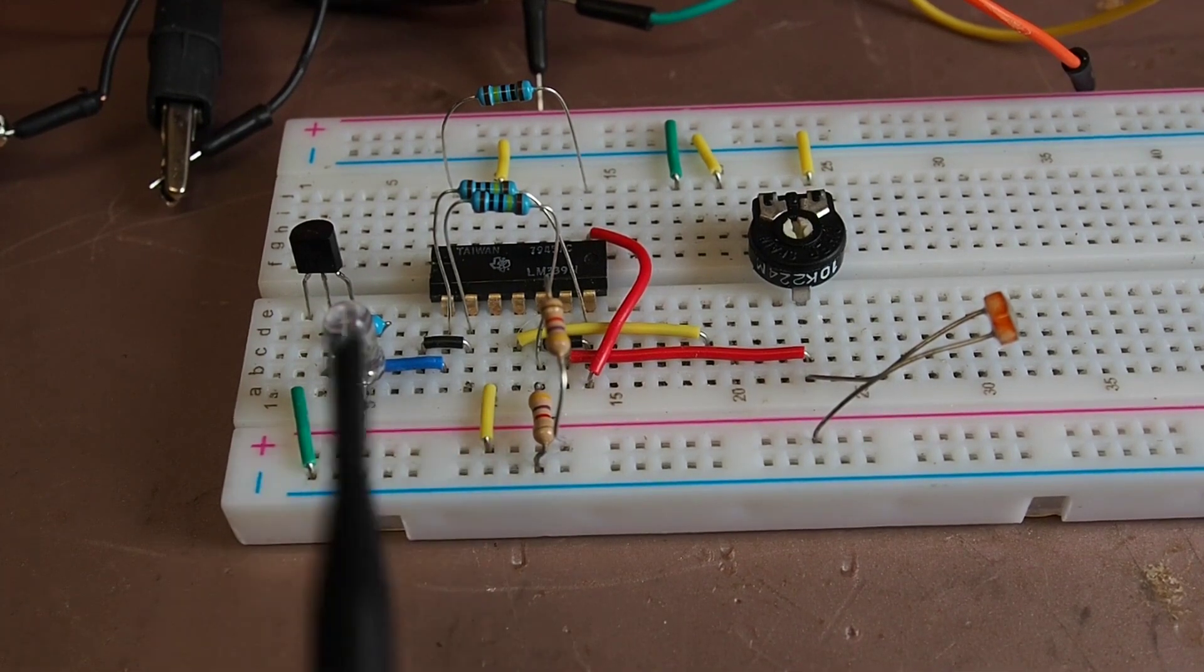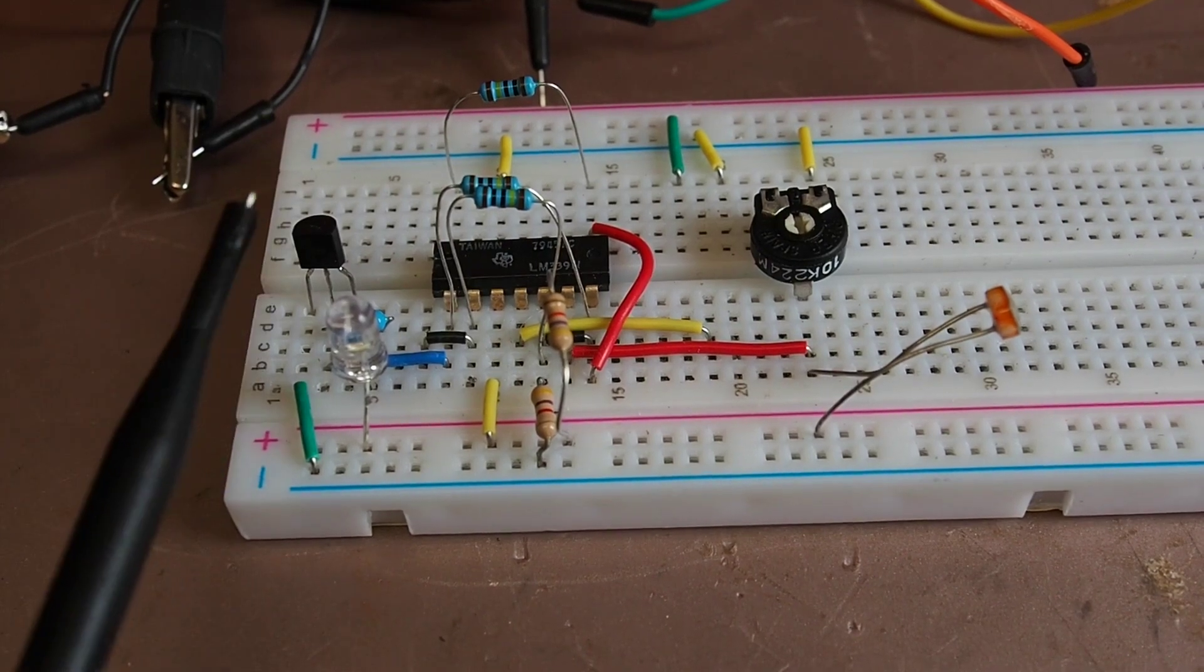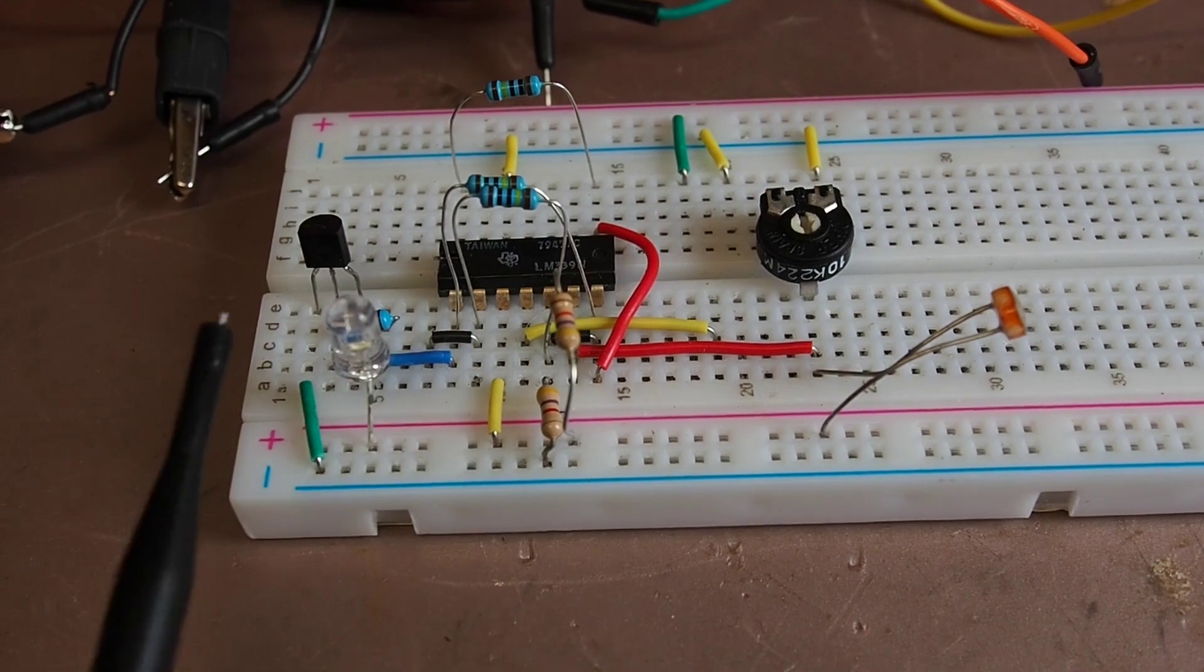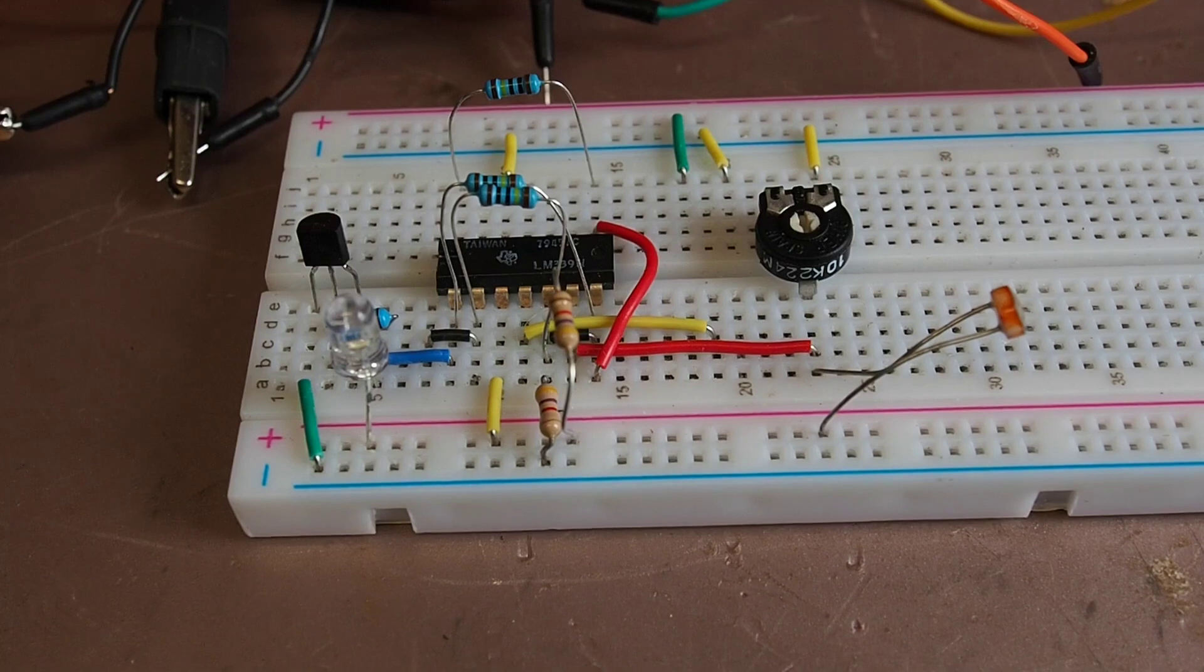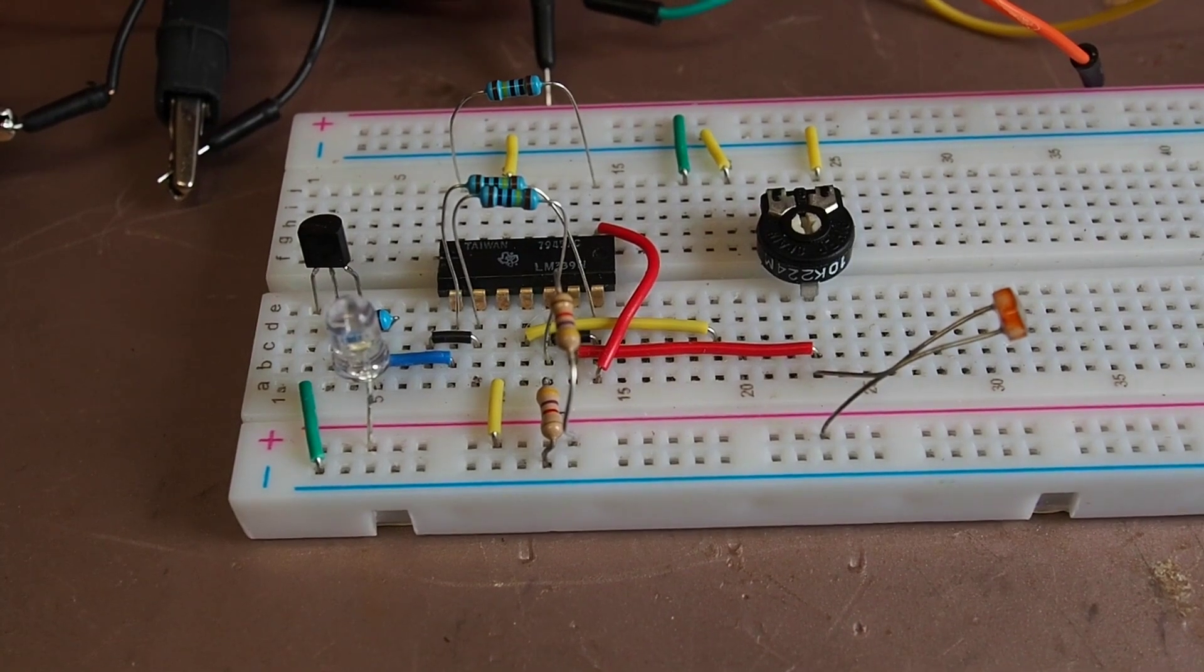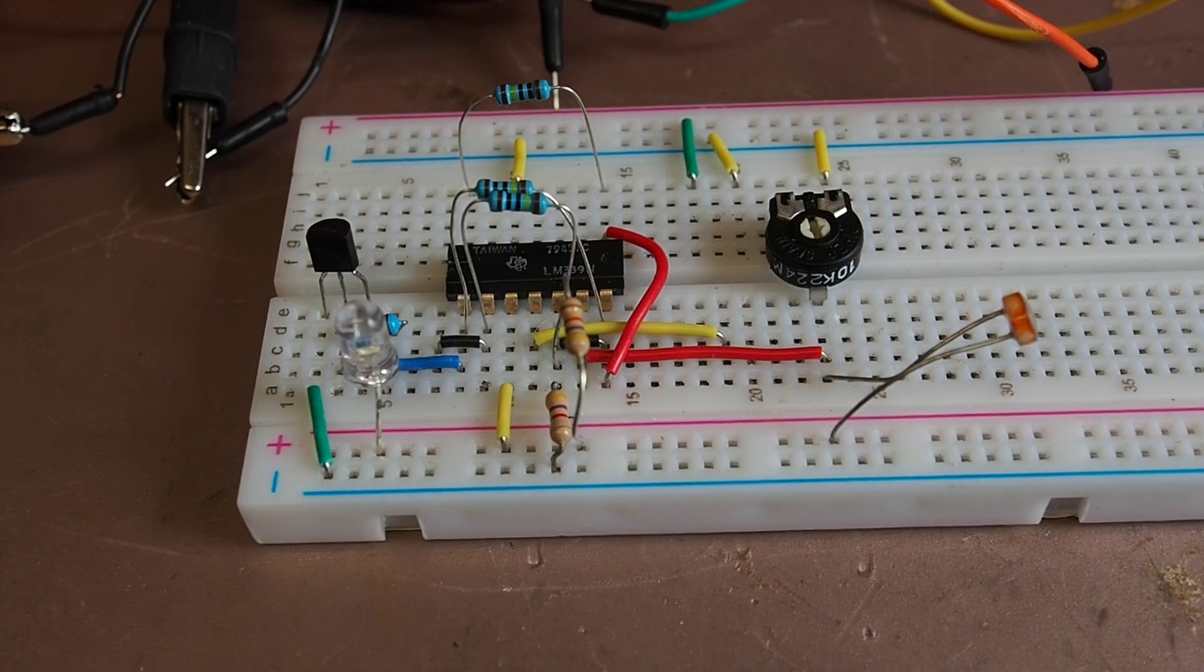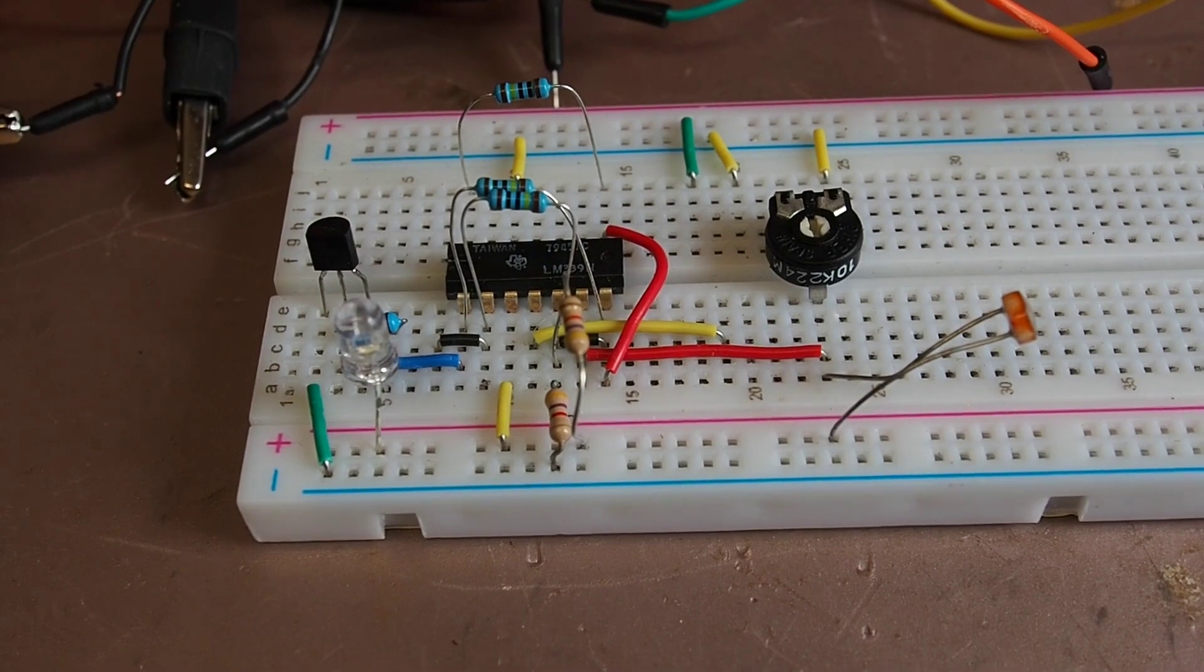The output of the op amp goes directly to the gate of this N-channel MOSFET, and then we've got an LED and a current limiting resistor there just to prevent the LED getting excited and blowing itself up.